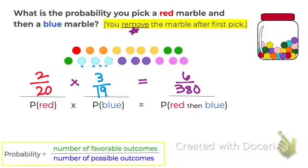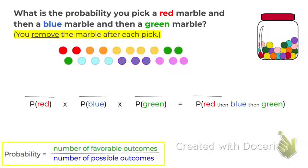We can change that to a decimal by dividing, and then we can change that to a percent. Now let's try one more. This is very similar, except now we have a third marble that we're going to pick. So what's the probability of picking a red, then a blue, then a green — and we're going to remove the marble after each pick.